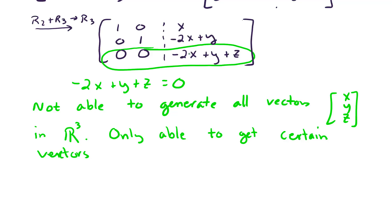So we're only able to get certain vectors that satisfy this particular constraint of negative 2x plus y plus z equals 0. In other words, this tells us that the span of vector u and vector v is not equal to all of R3.